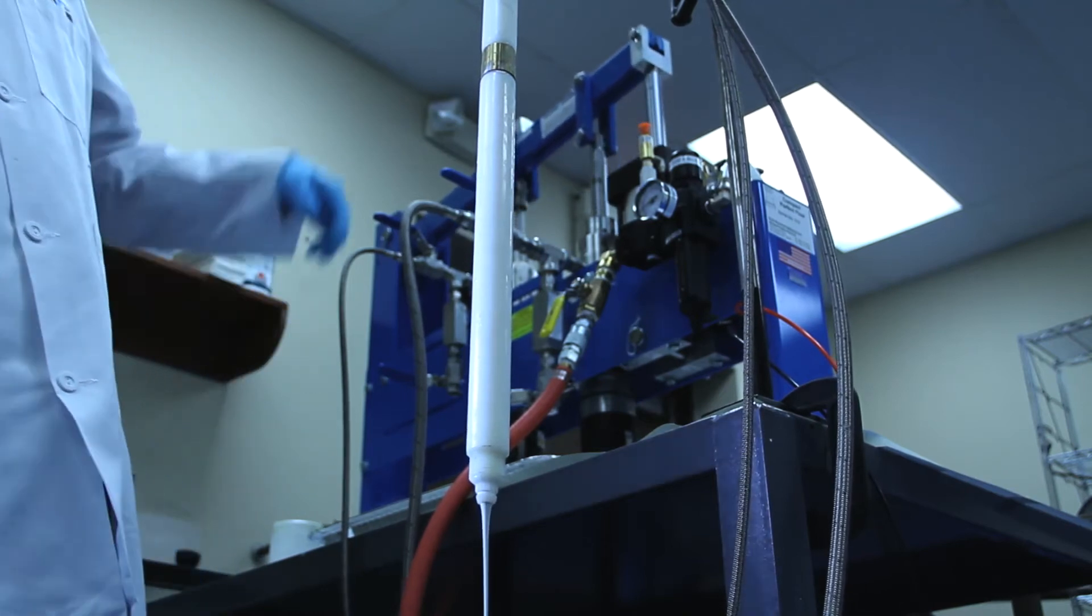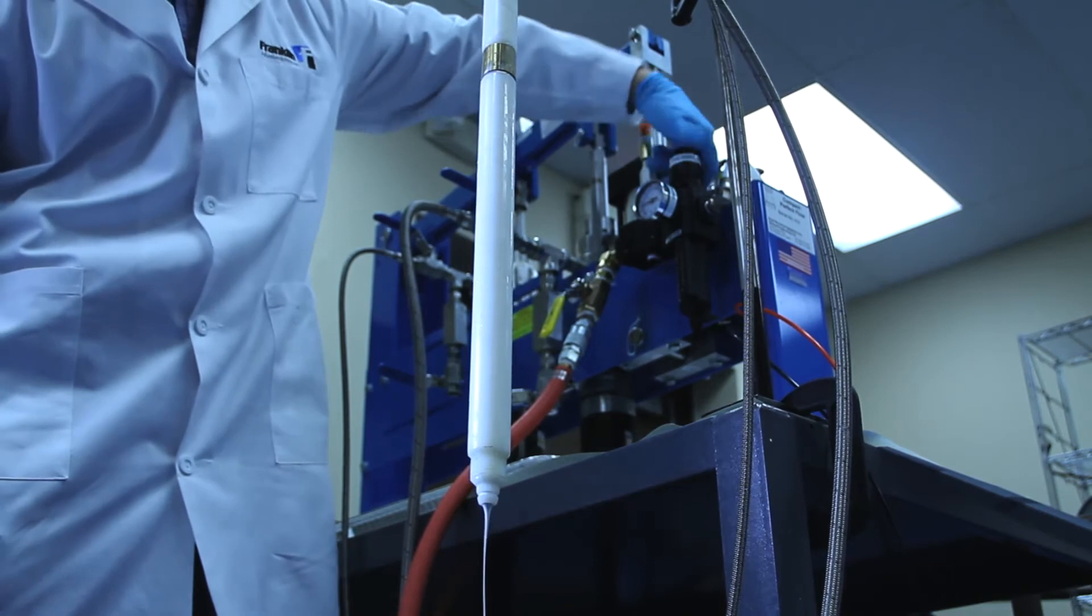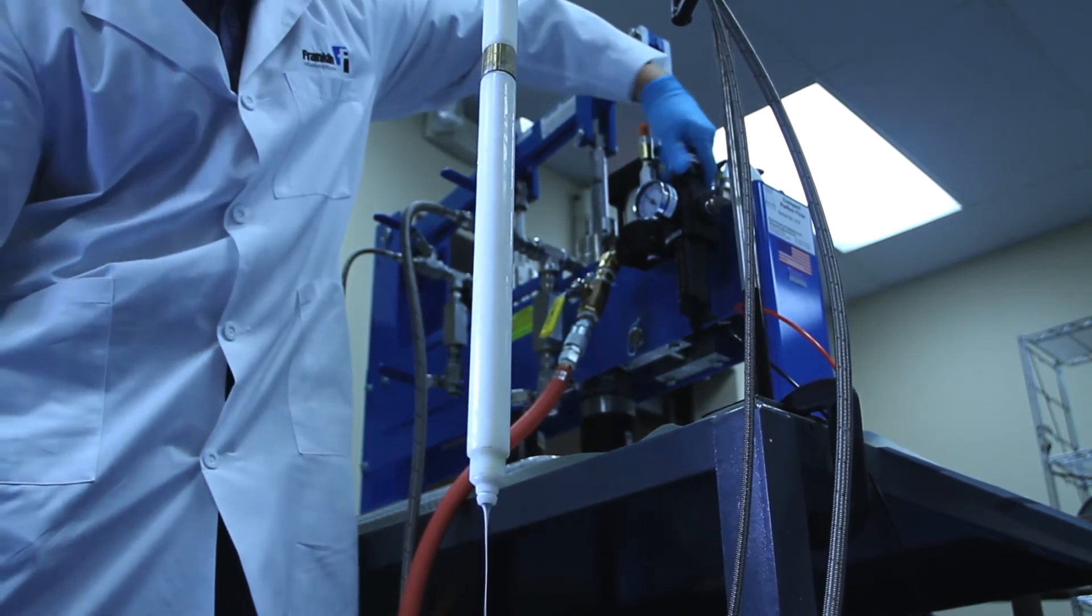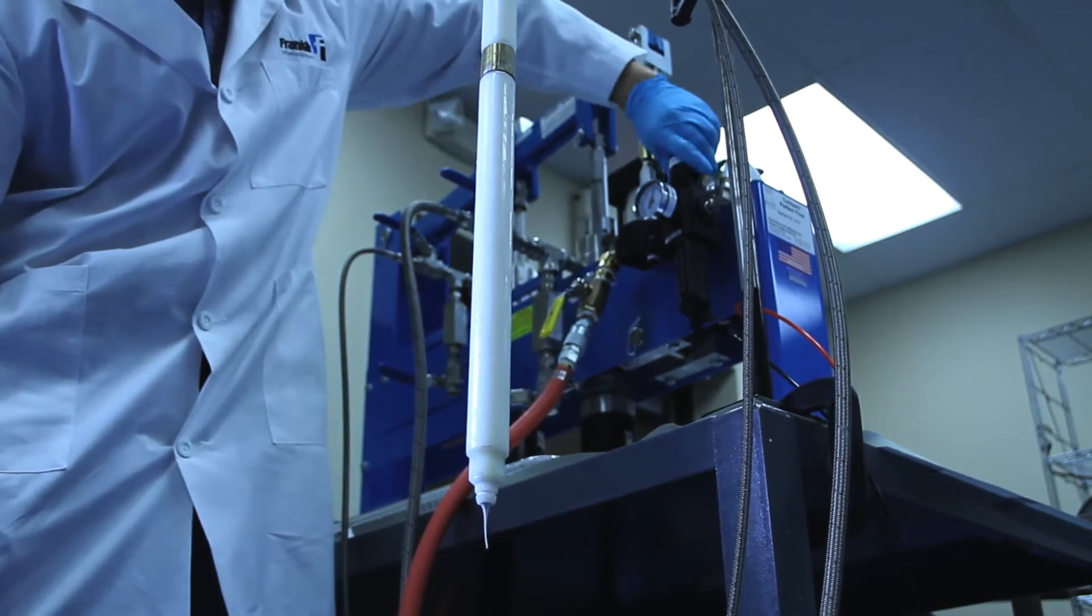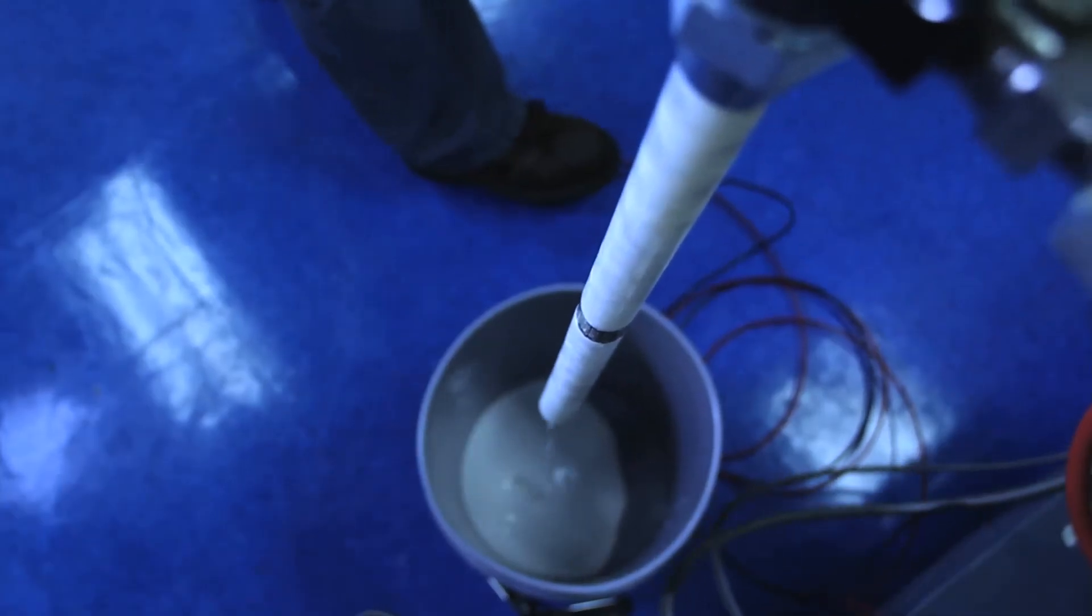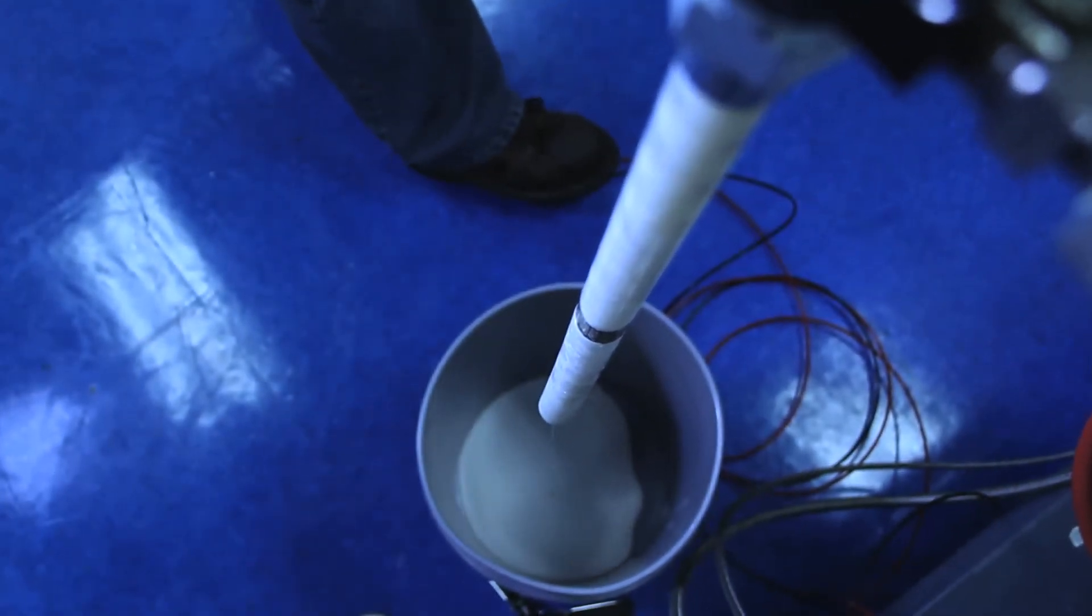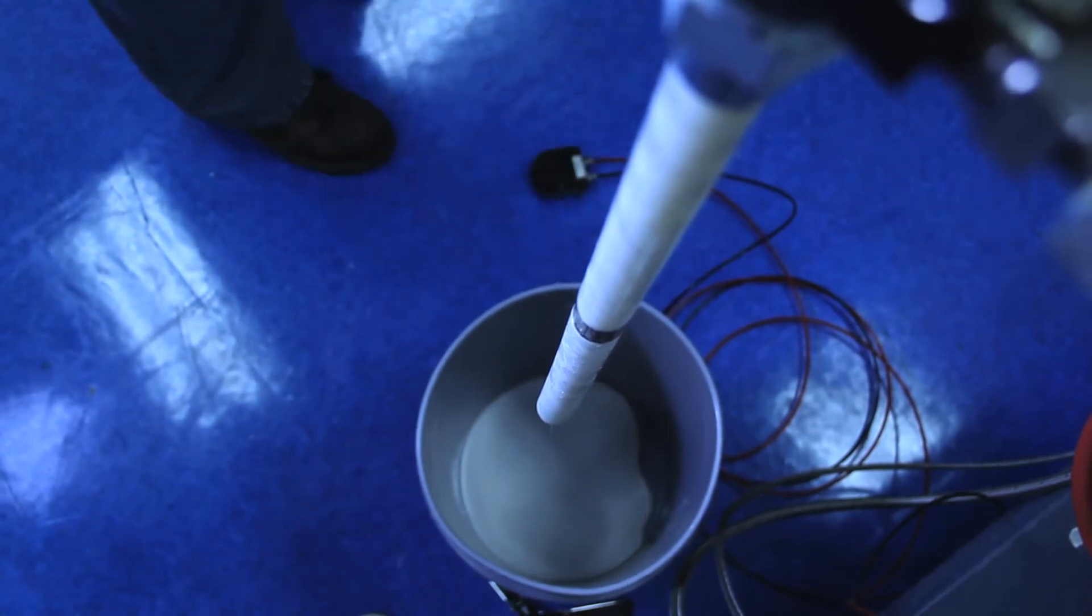The flow rate is adjusted by changing the pressure on the regulator. The minimum pressure required to run the mixer is 20 to 25 psi and gives an estimated flow rate of 2.5 pounds per minute. At 100 psi, the flow rate is estimated at 18 pounds per minute.